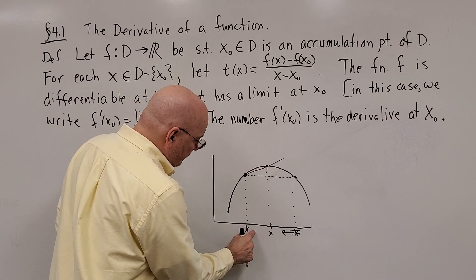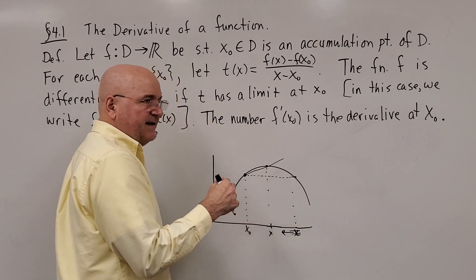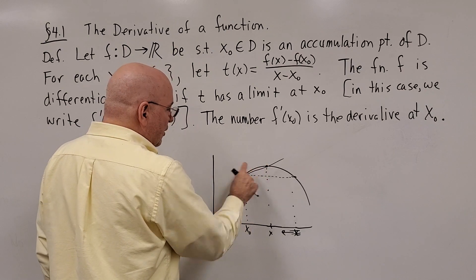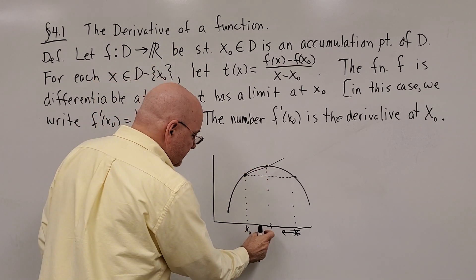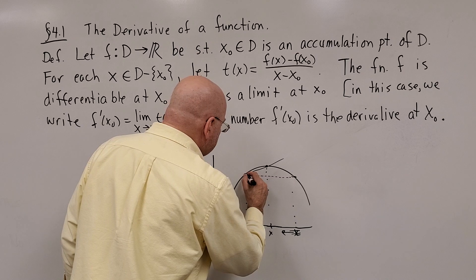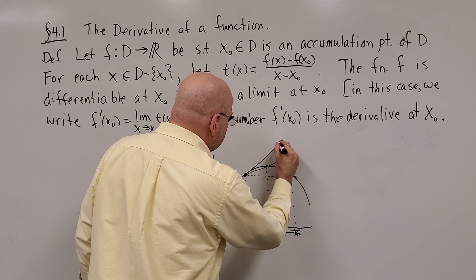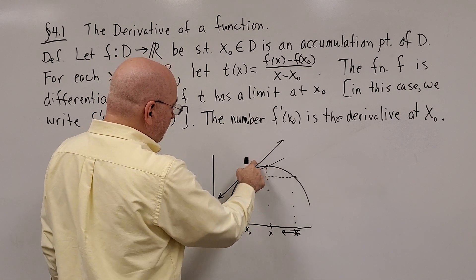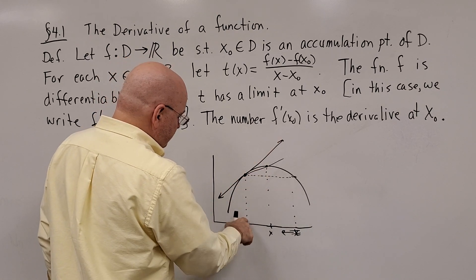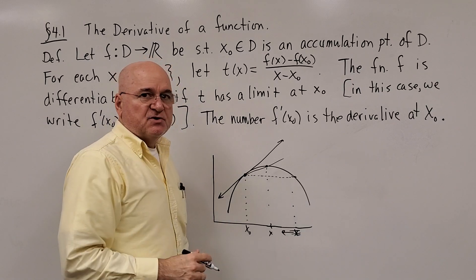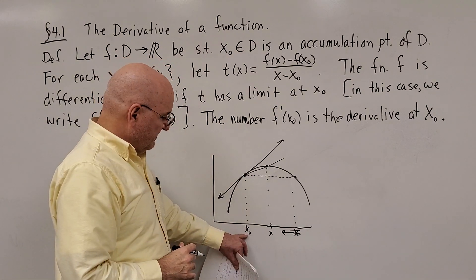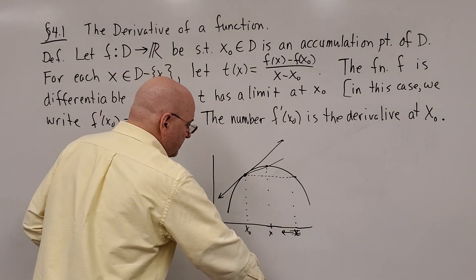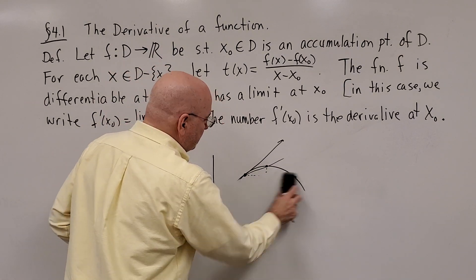If we let the distance between x naught and x approach zero, if that limit exists of the slope between the two points as x gets closer and closer, we'll end up with a tangent line. The slope of this tangent line at this point would give you the derivative of the function at that point x naught.